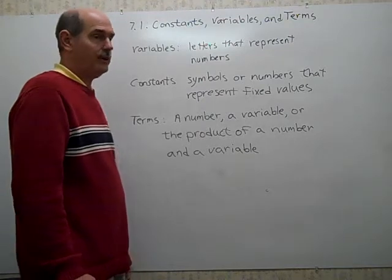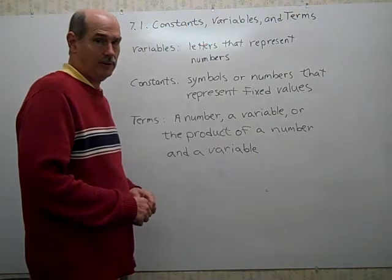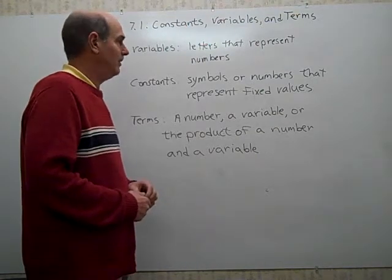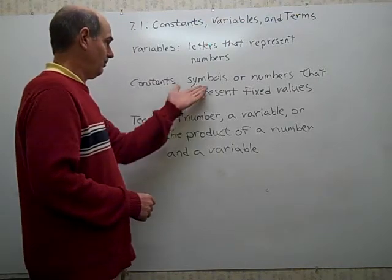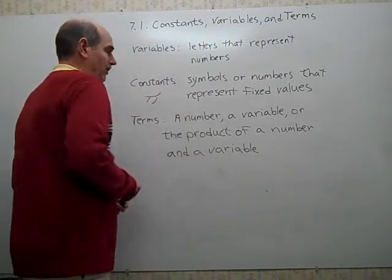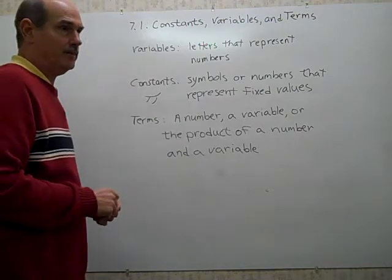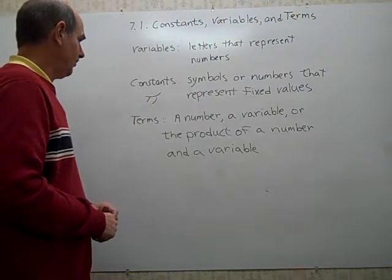A constant is a symbol or a number, usually a number, that has a fixed value, and you know exactly what it represents. So if it says 3, it is 3. If it says pi, that's an example of a symbol. The symbol pi stands for 3.14159, on and on forever with no pattern. So that's an example of a symbol that represents a constant.